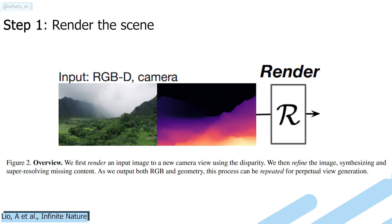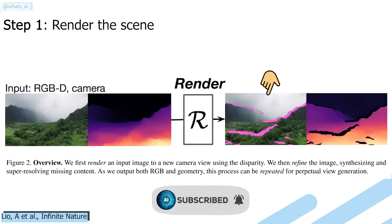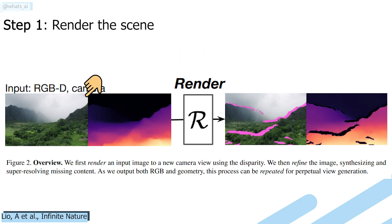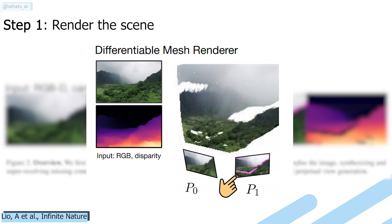Then we enter the real first step of their technique, which is the renderer. The goal of this renderer is to generate a new view based on the old view. This new view will be the next frame, and the old view is the input image. This is done using a differentiable renderer — differentiable because we can use backpropagation to train it, just like we traditionally do with conventional deep nets. This renderer takes the input and disparity map to produce a three-dimensional mesh representing the scene, then we simply use this 3D mesh to generate an image from a novel viewpoint, P1 in this case.